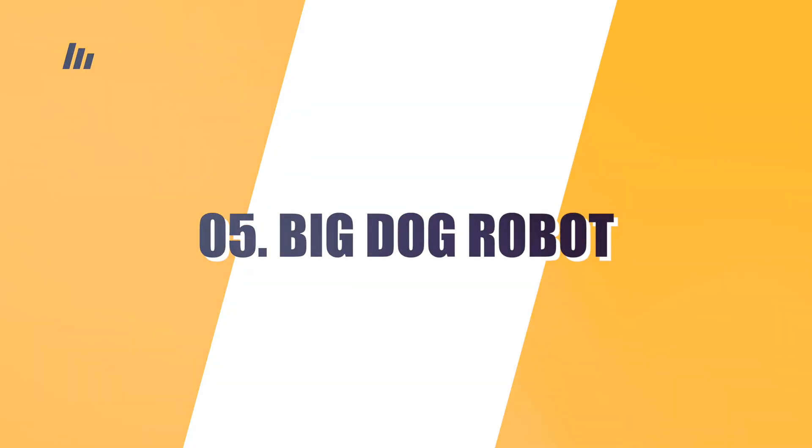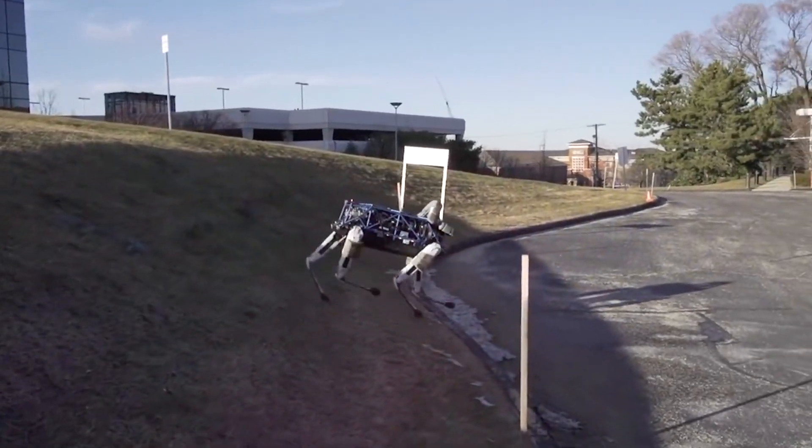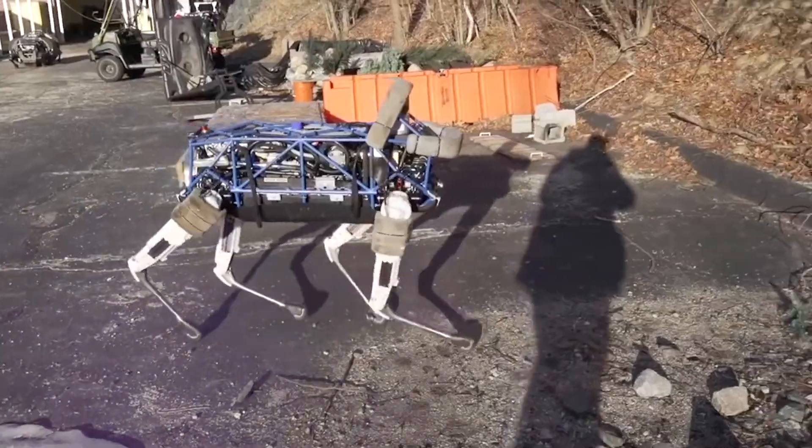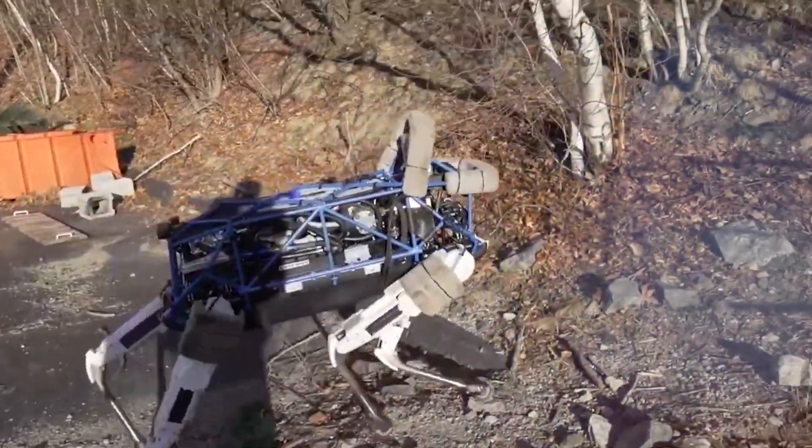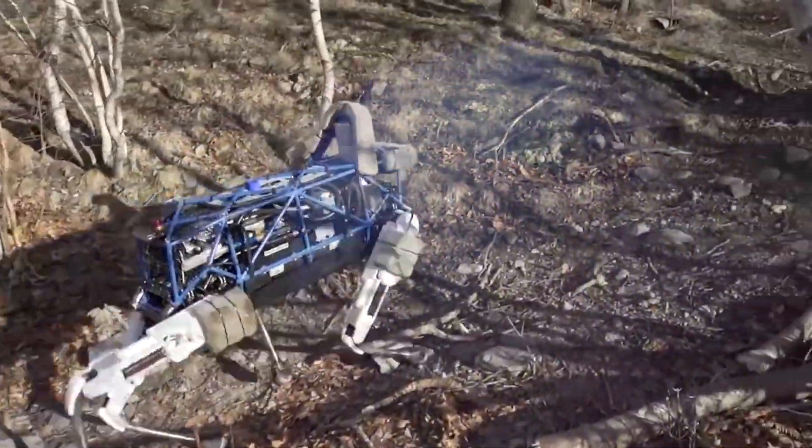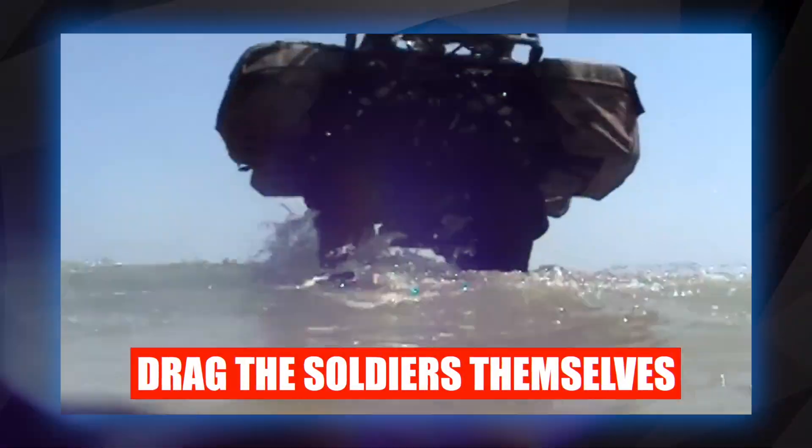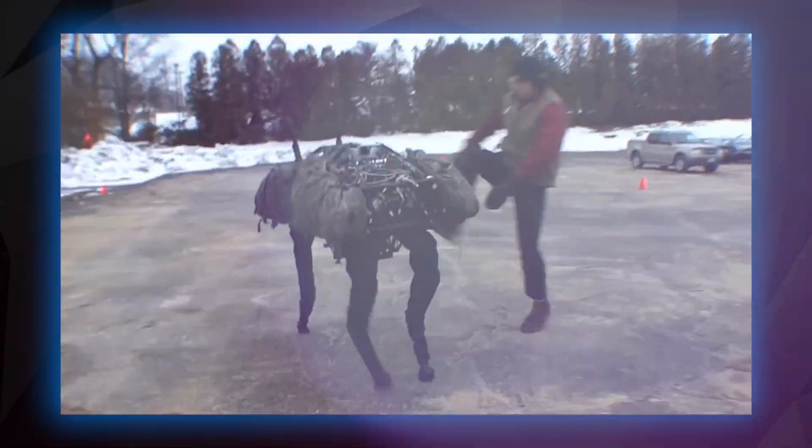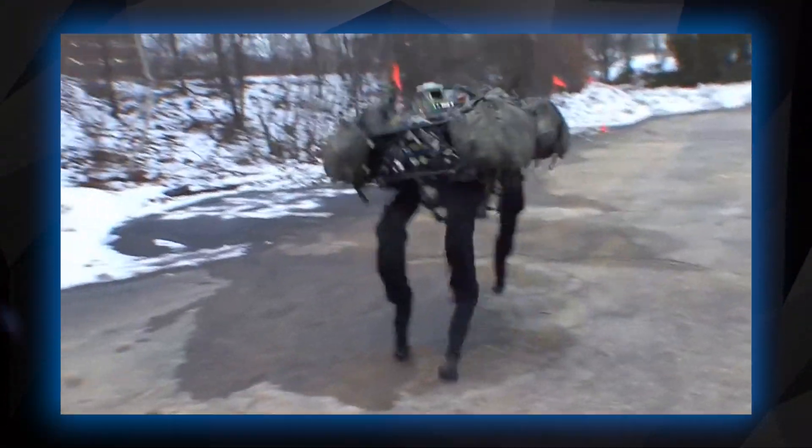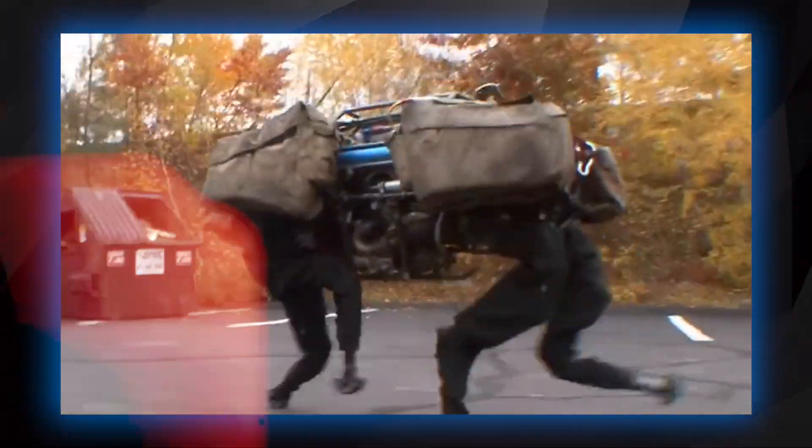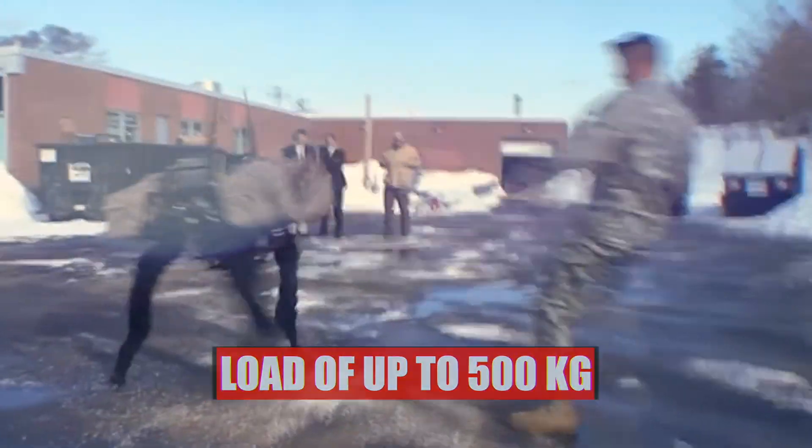Number 5: Big Dog Robot. This robot embodies the dreams of the American infantrymen. This assistant, created precisely for these strong guys, literally carries all the weight that previously had to drag the soldiers themselves. To be honest, it does not really remind you of a dog. However, it still can follow a person even with a load of up to 500 kg.